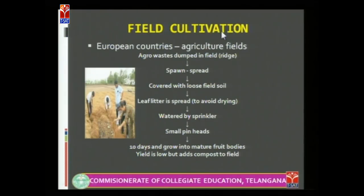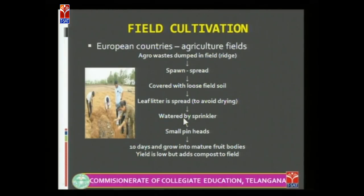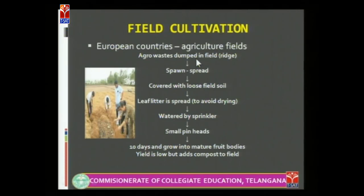The third method is field cultivation, usually adopted in European countries for growing Volvariella species. After harvesting the crop from the field, agro-wastes are dumped in the field in the form of a ridge, mixed with spawn, and covered with a layer of soil. Leaf litter is placed on top to avoid drying, then it is watered with a sprinkler. After one week, small pin heads will appear, and after 10 days mature fruiting bodies can be seen. Using this method, the yield is low, but it adds compost to the field.